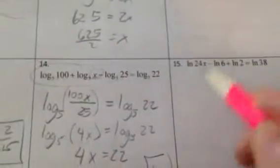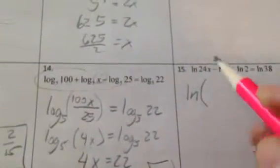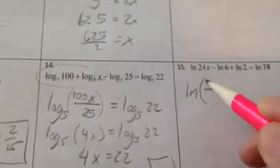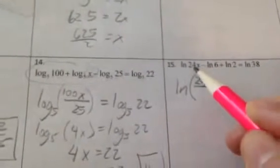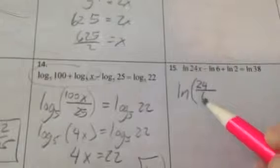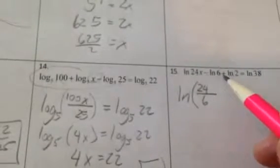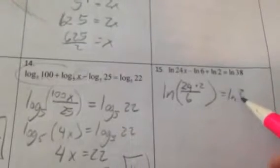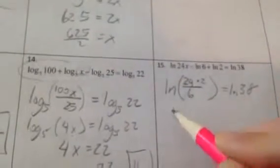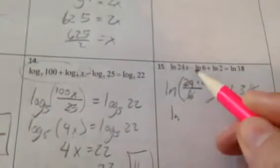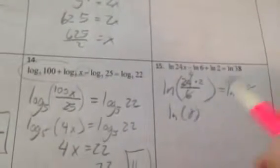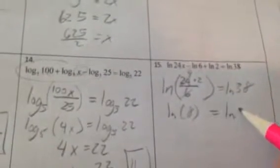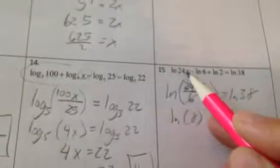And again, smoosh this side together into a single log. Anything that's positive will go on top. So the 24 goes on top, but the 6 will be on the bottom because it's negative. The 2 will be on top because it's positive. The log of that equals the ln of 38. Simplify this. I can take out a 4, so that'll be 8. The ln of 8 equals the ln of 38. Man, again, I lost my x.